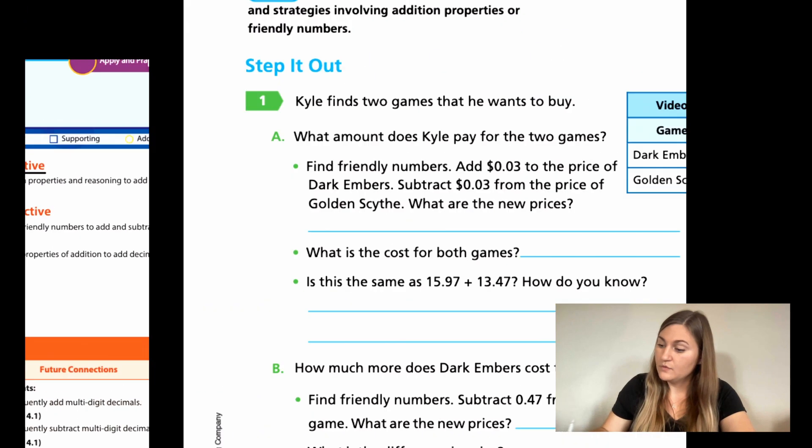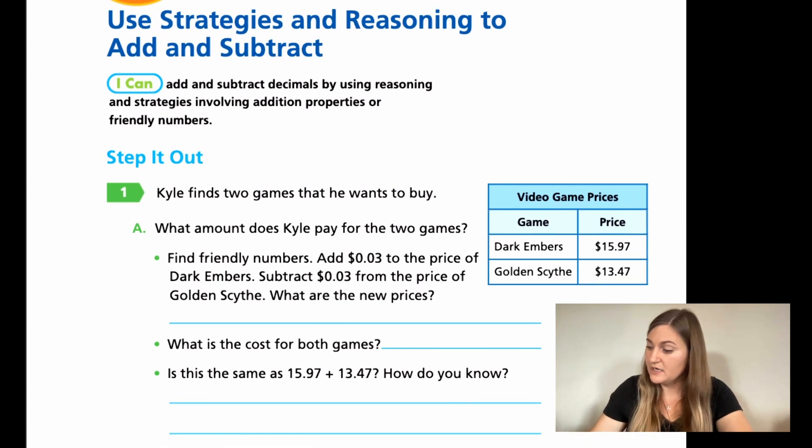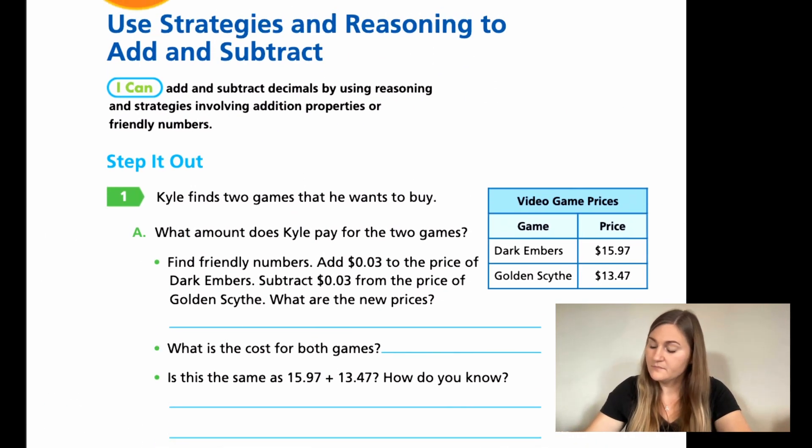Let's go ahead and move into the lesson. We're on page 359. We start with a step it out. It says Kyle finds two games that he wants to buy. What amount does Kyle pay for the two games? So if I'm going to go to the store and I'm going to pay for the two games, I know that I'm going to be adding the two prices together and then paying that total. So we are doing addition for this problem.